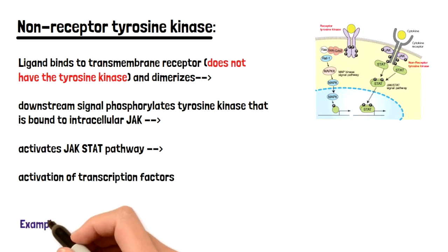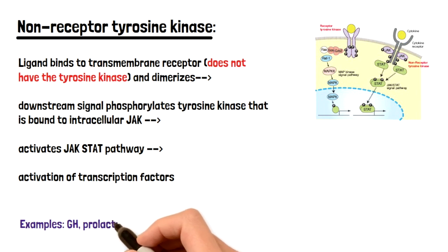Now hormones and ligands that actually use this pathway will include growth hormone. So in this case it's not a factor, it's growth hormone, prolactin, and EPO.